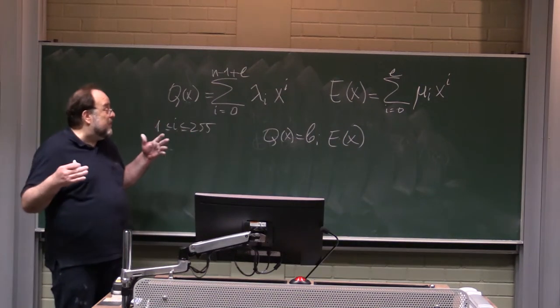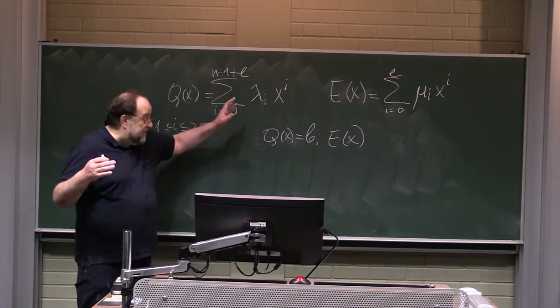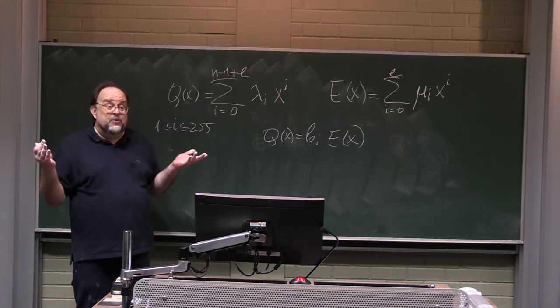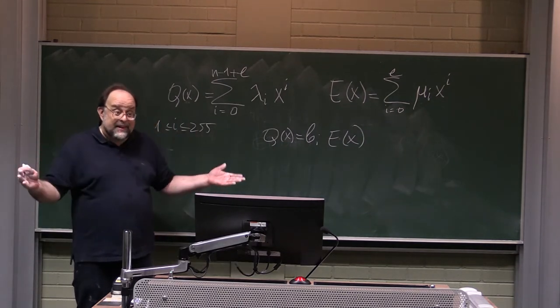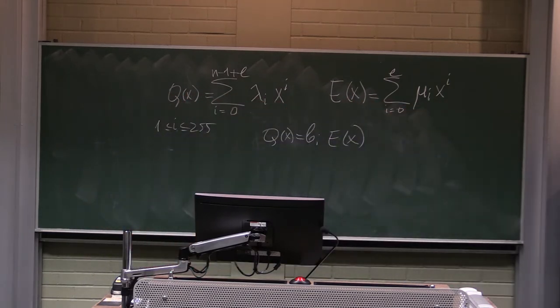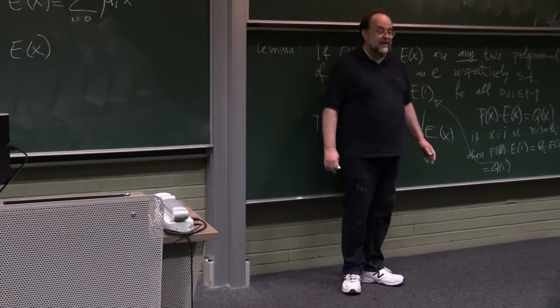Generally, especially if there are few errors, this will be a grossly over-determined system. Which solution do we take? It doesn't matter. Any solution will produce P correctly when you divide Q(X) by E(X).